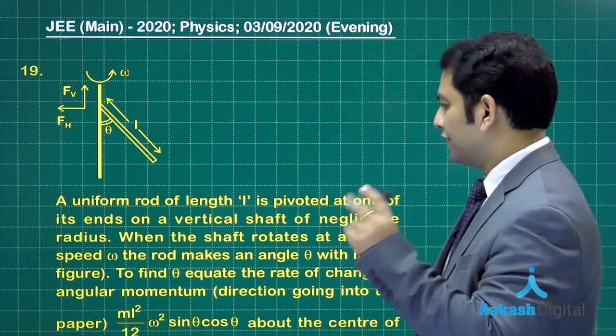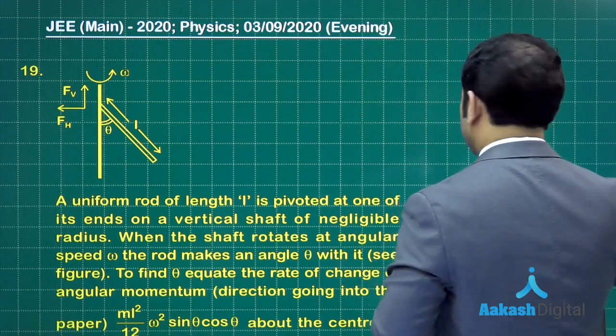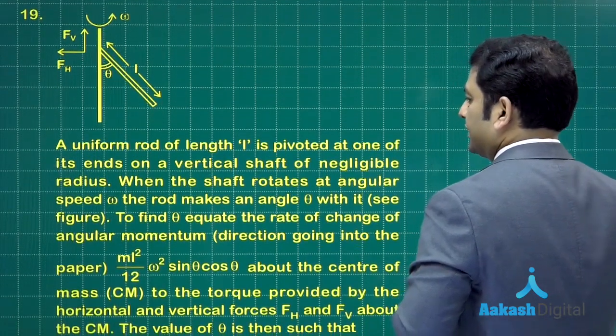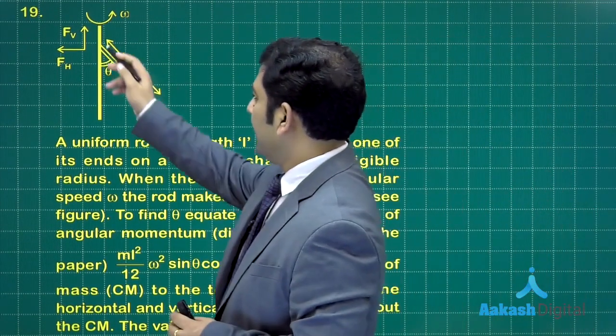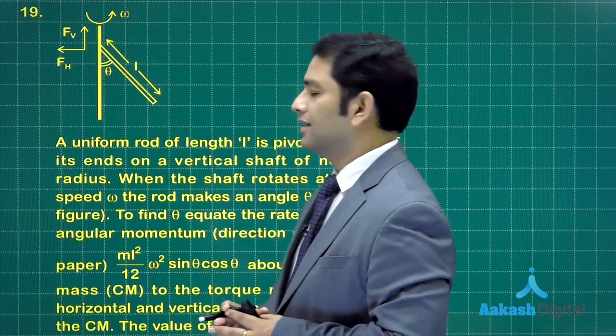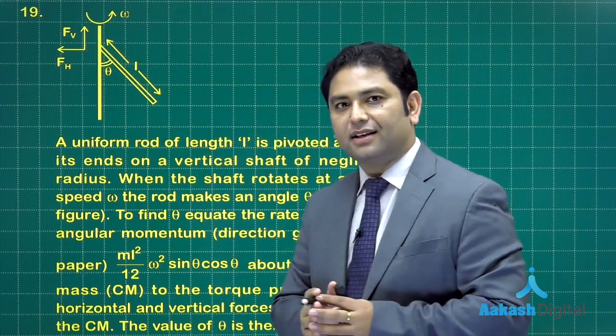Question number 19, this is a very beautiful one. Let me just explain. There's a rod and it's rotating about this vertical axis with an angular velocity omega.